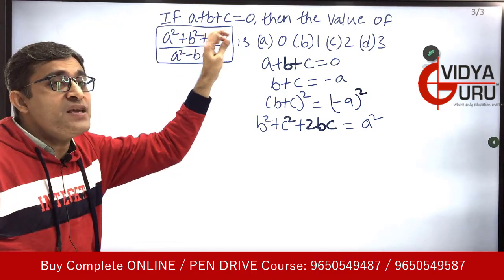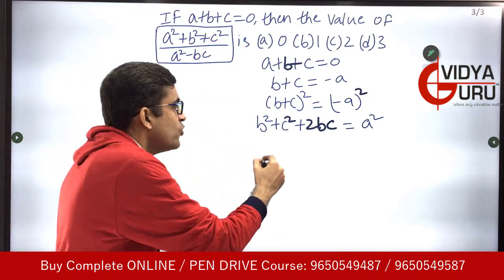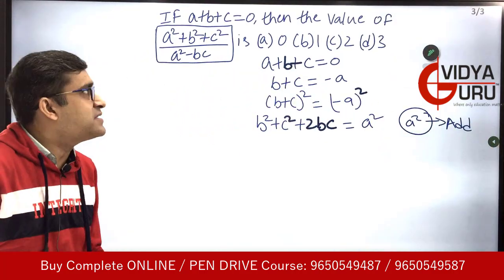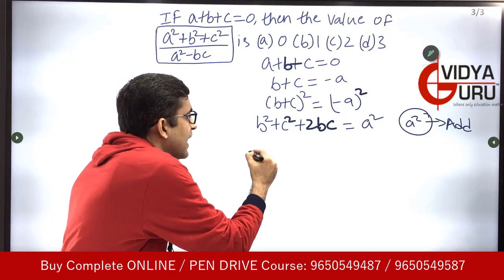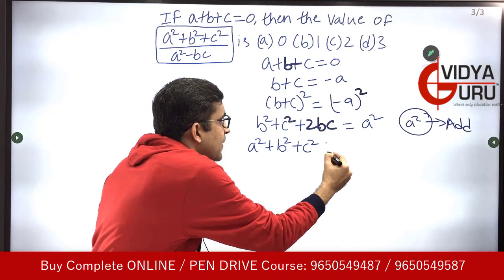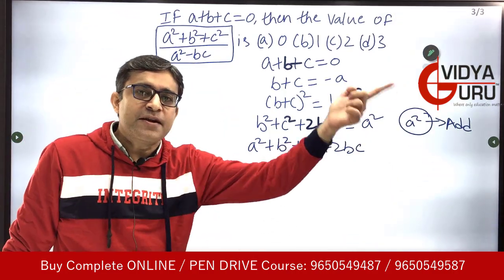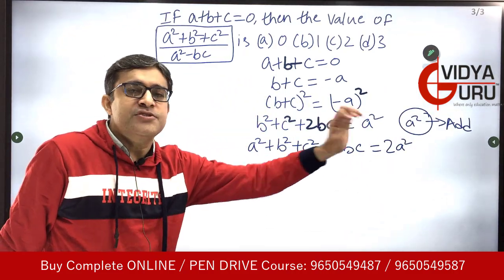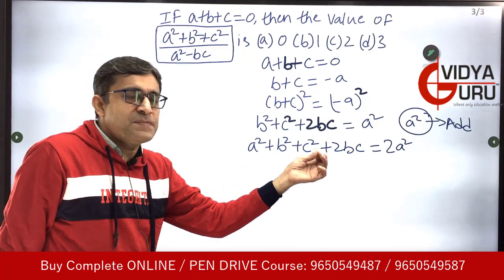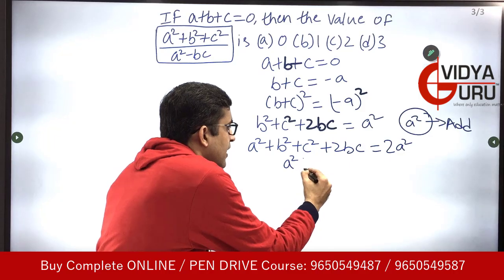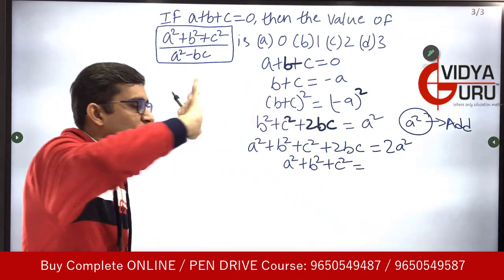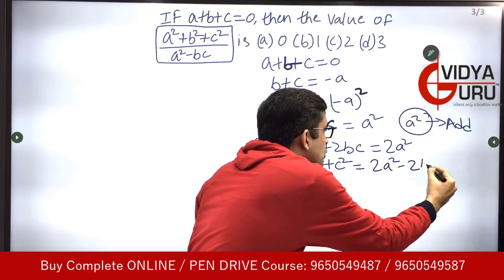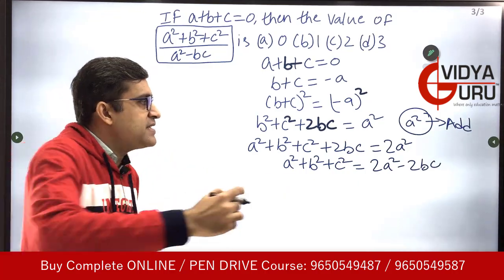Now I need to arrive at a² + b² + c². I'll add a² to both sides. That gives a² + b² + c² + 2bc = 2a². So a² + b² + c² = 2a² - 2bc, moving 2bc to the other side.